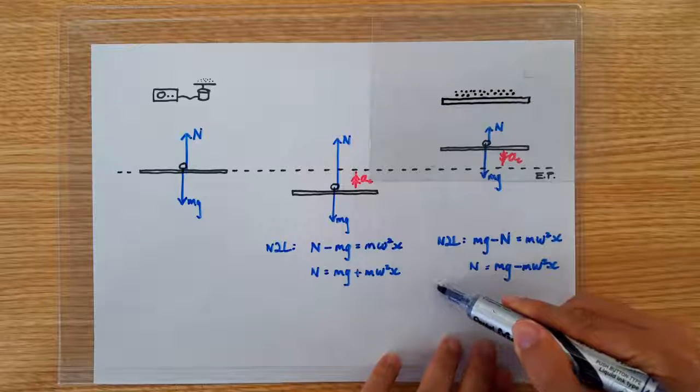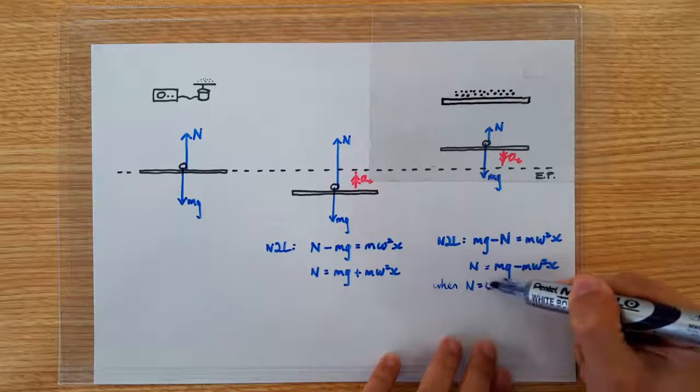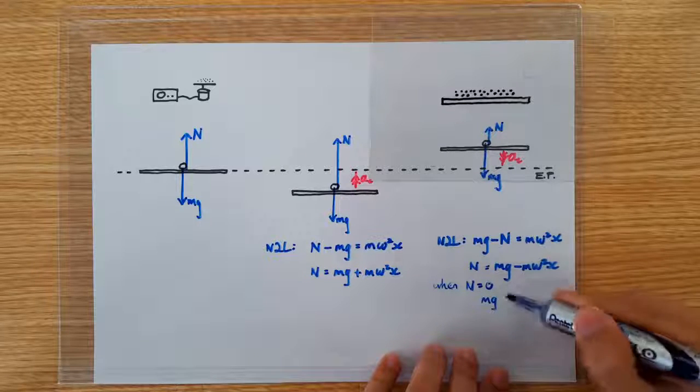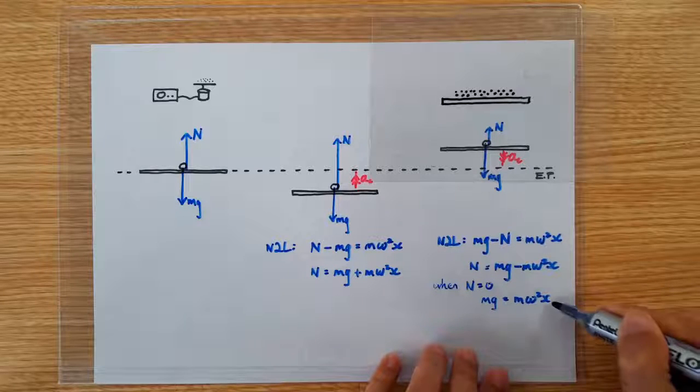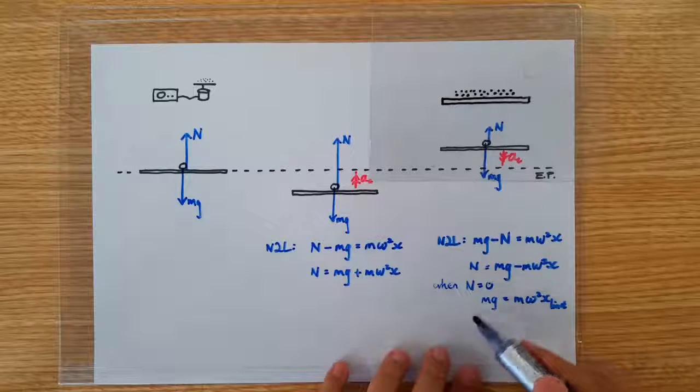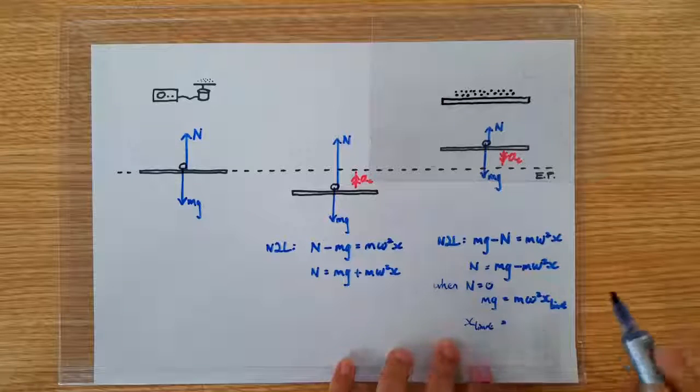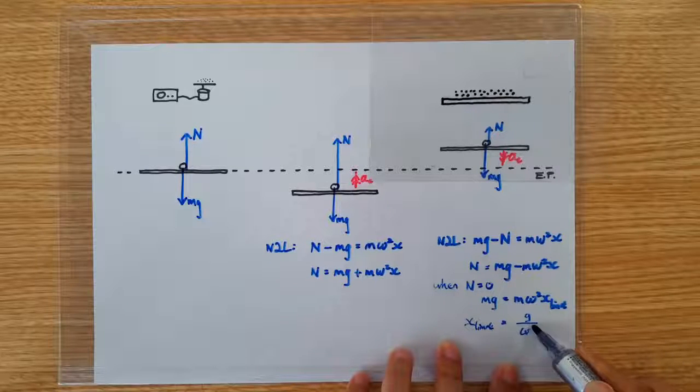In fact, we can solve for this limiting displacement by setting the normal contact force to be zero. So if the normal contact force is zero, mg is going to be equal to m omega square x limit. So the limiting displacement will work out to be g divided by omega square.